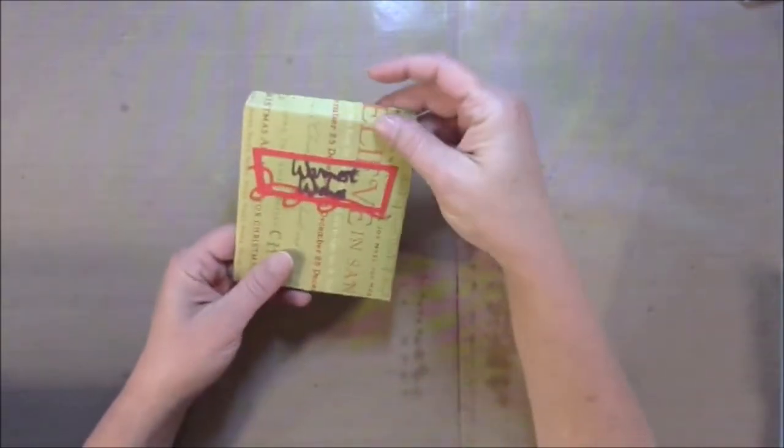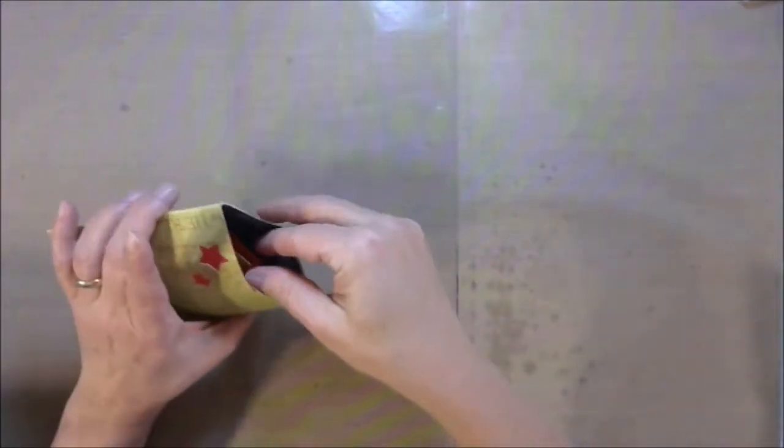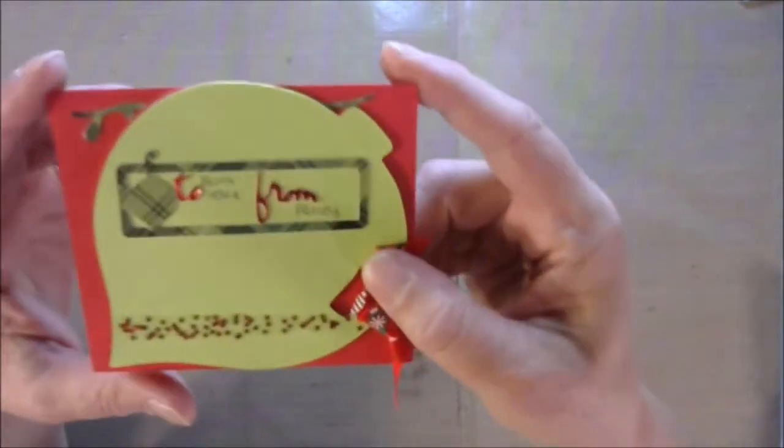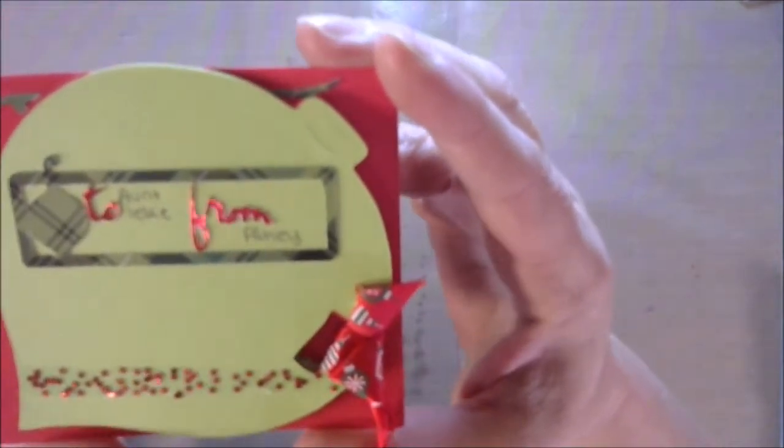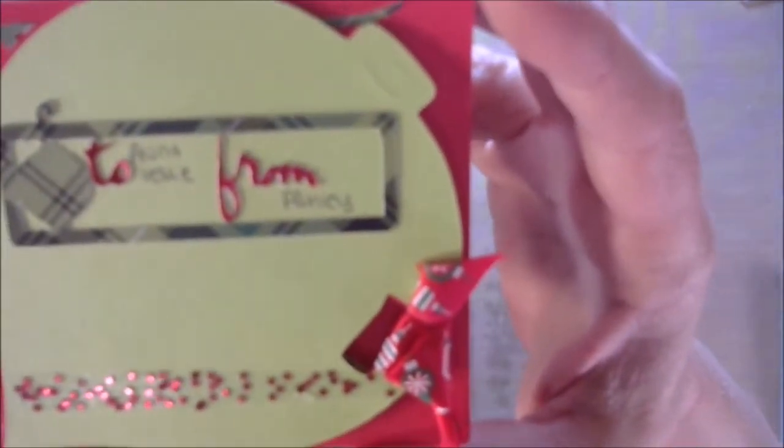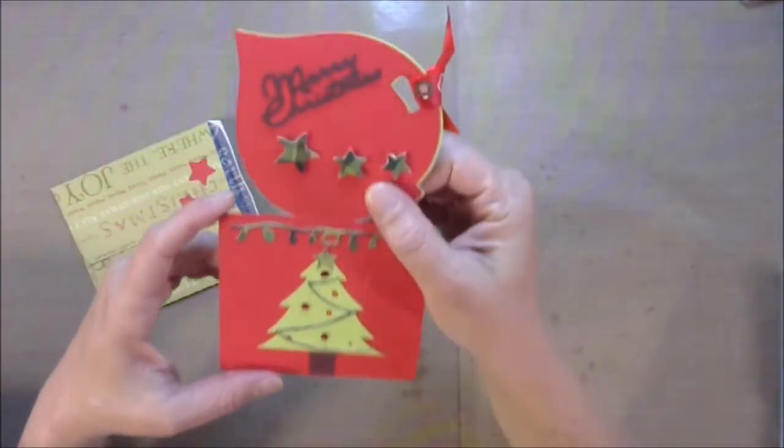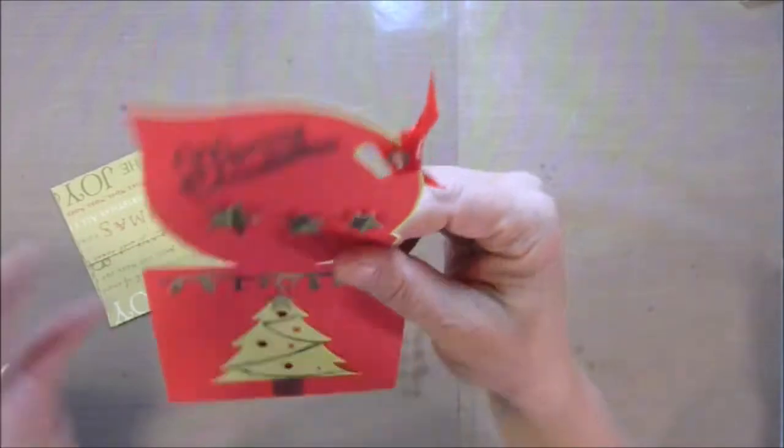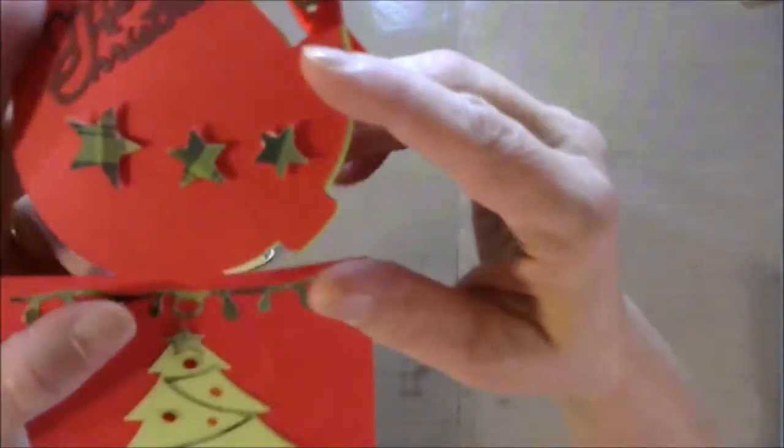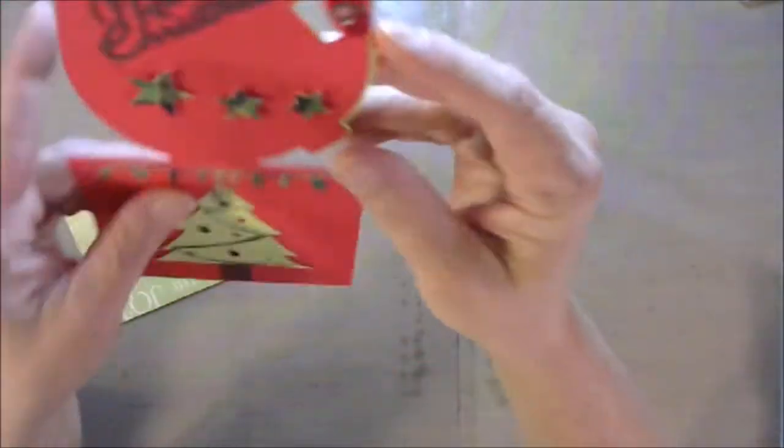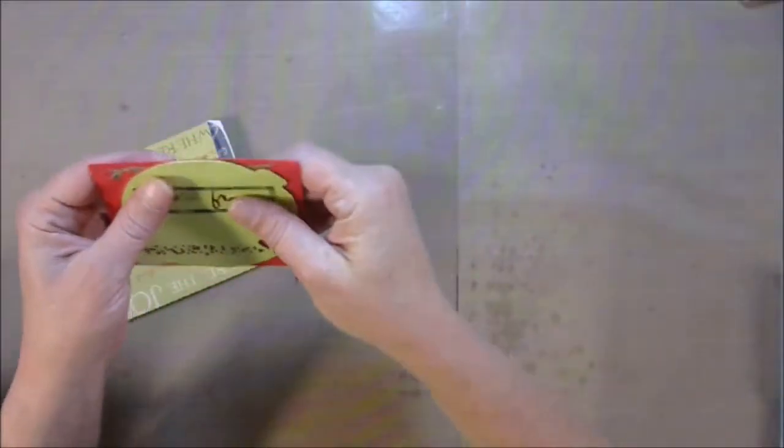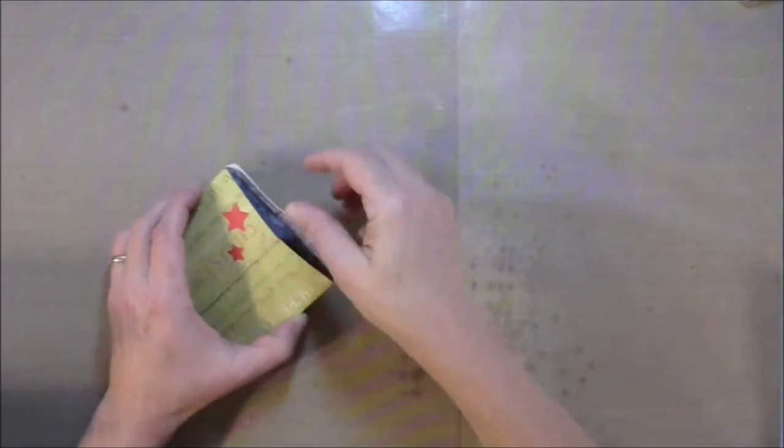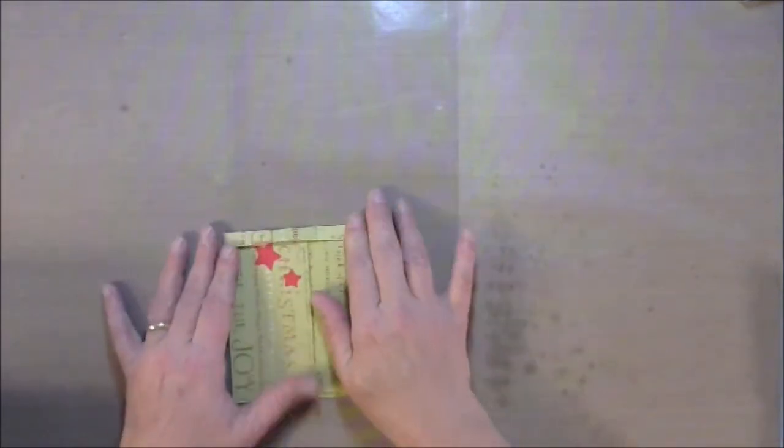She made me this card and it says warmest wishes. She made the envelope. And then she made me this card and it says to Aunt Leslie from Ashley. Then it just says Merry Christmas with this little Christmas tree on it and all the little adornment. She did this all herself, she even pop dotted up the little stars. I'm so proud of her, especially to have someone else in the family who's crafting and understands the craziness that we all feel.